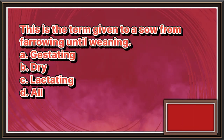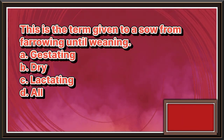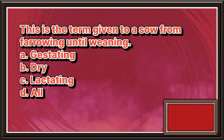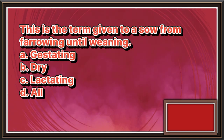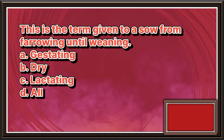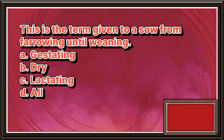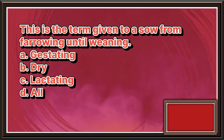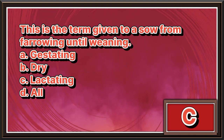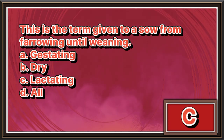This is the term given to a sow from farrowing until weaning. A. Gestating. B. Dry. C. Lactating. D. All. The answer is letter C.